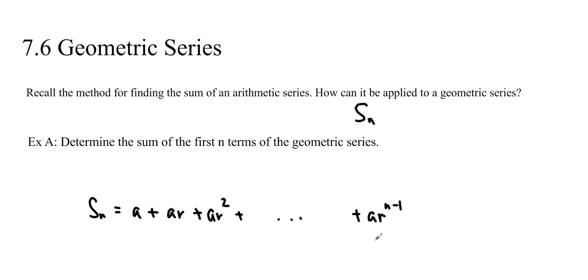That's the general term for the geometric sequence. We just add them all together to get the series. Now to modify Gauss's method, we're actually going to multiply by r. So r times S n. And this is going to be a nice little elimination that's going to happen here. So we're going to get ar plus ar squared plus ar cubed and so forth until we get a times r to the n minus 1 plus a times r to the n, right?